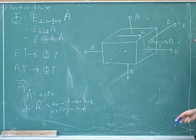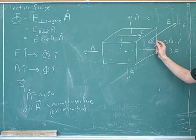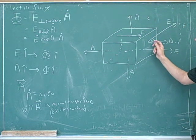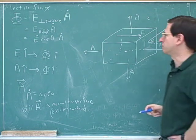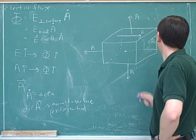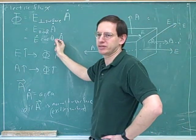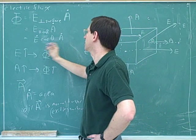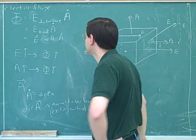If you focus on the angle that E is making with the normal to the surface, then you need the cosine, because we want the component of E that's parallel to the normal — and that is the component that's perpendicular to the surface.